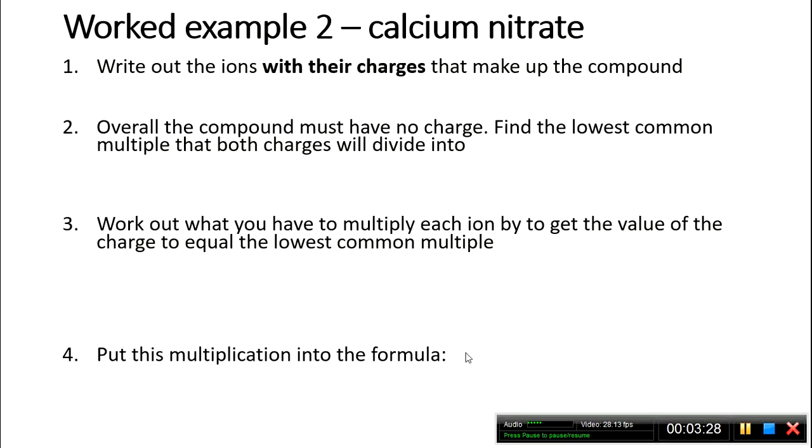Let's look at another one, calcium nitrate. The ions are calcium with a 2+ charge, and nitrate is NO3 with a 1- charge. The lowest common multiple is 2, because 2 can be divided by both 1 and 2.